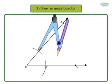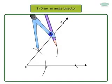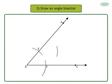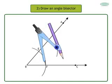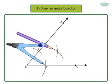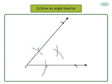Now take E as center and with the same radius, draw an arc in the interior of angle ABC. Now take F as center and with the same radius, draw an arc intersecting the previous arc in the interior of angle ABC.